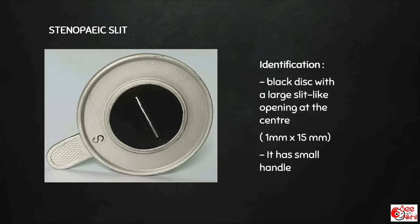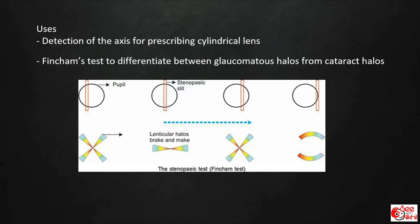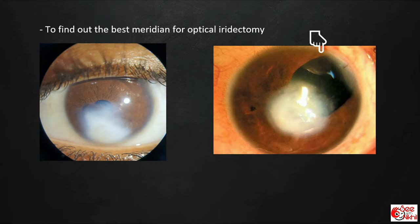This is a stenopic slit — a black disc with a slit-like opening that is 1 mm in width and 15 mm in length, with a handle. It basically acts as an elongated pinhole. It is used in detection of the axis for prescribing cylindrical lenses, in the Fincham test to differentiate glaucomatous halos from cataractous halos, and in cases where corneal opacity encroaches onto the pupillary area. Stenopic slit helps to find the best meridian for optical iridectomy. It is also used as part of the Maddox wing.